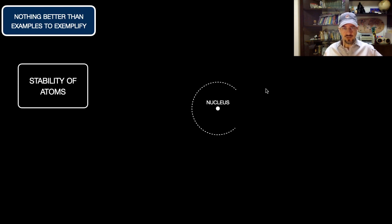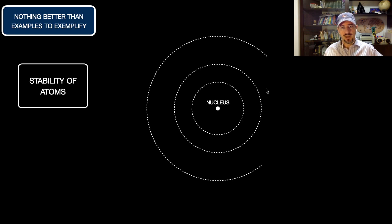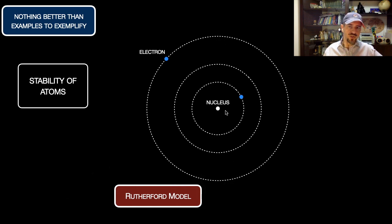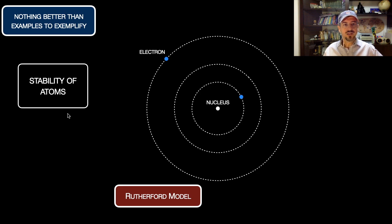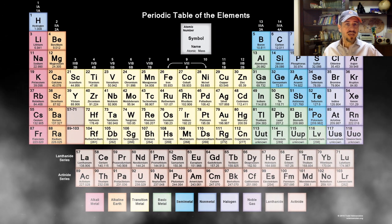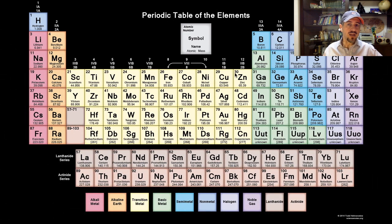The stability of atoms is also an issue. The Rutherford model describes an atom with a nucleus and electrons circling around it, but under classical physics laws the electrons would lose energy continuously and fall into the nucleus along a spiral path. Classical physics cannot explain the stability of atoms — the atoms would not be stable — but they are, so we have a problem.